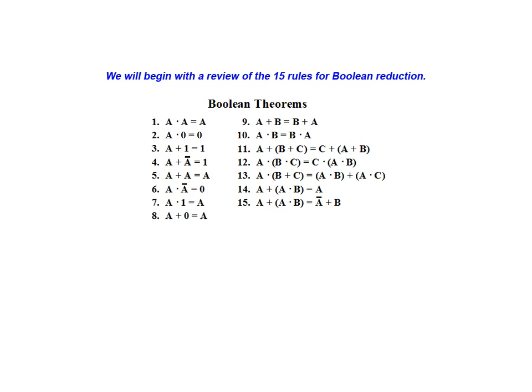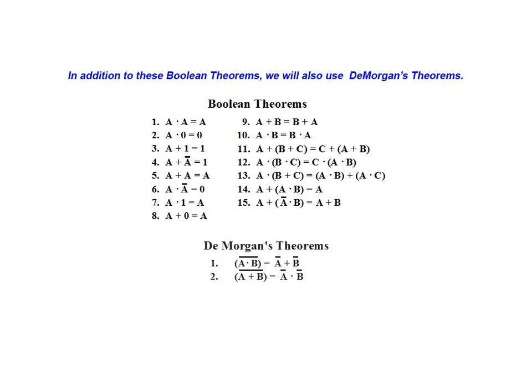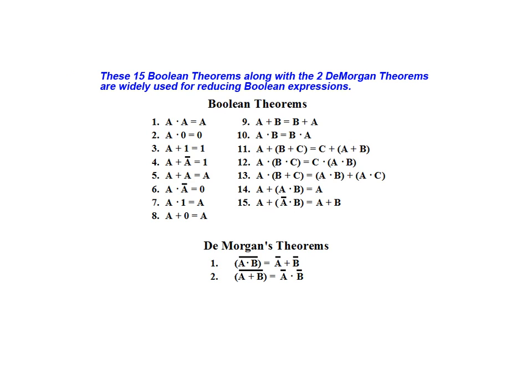We will begin by reviewing the 15 rules for Boolean reduction. In addition to these Boolean theorems we will also be using DeMorgan theorems in our reduction. These 15 Boolean theorems along with the two DeMorgan theorems are widely used for reducing Boolean expressions. At this point you may want to pause the animation and become familiar with these equations before proceeding.